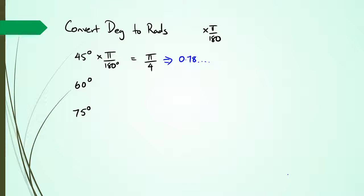Next we have 60 degrees and we want to convert this to radians. So once again we multiply by pi over 180, and when we do this we're going to get pi over 3. And again leave it as pi over 3 because it's a lot more accurate.